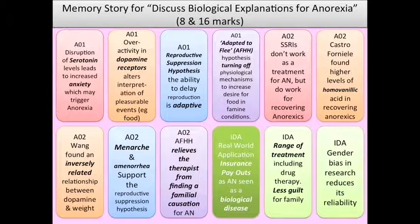The girls decide to go on holiday to get over their trauma and buy travel insurance. One of them loses their bags and the insurance company has no choice but to pay out. This represents the real-world application that biological research providing a biological reason for anorexia means insurance companies must pay out for its treatment, just as they would for a biological disease like schizophrenia.